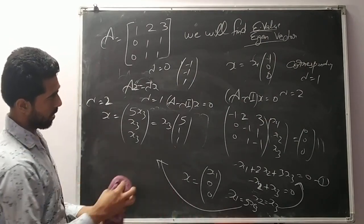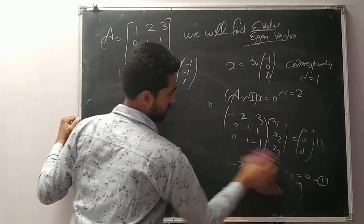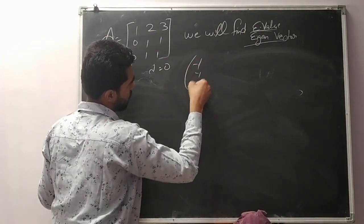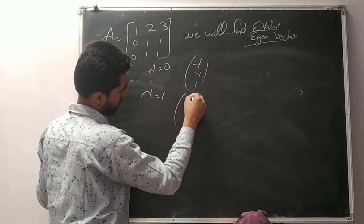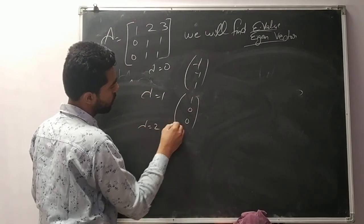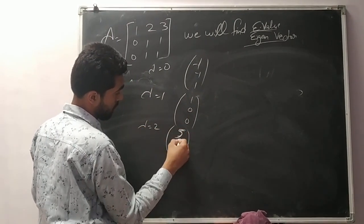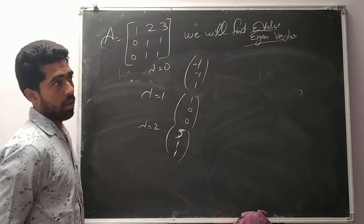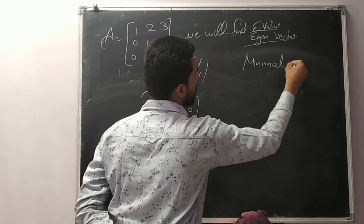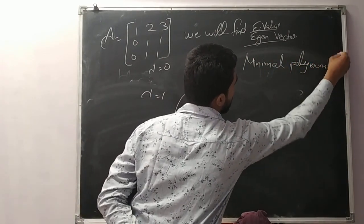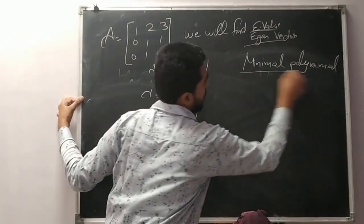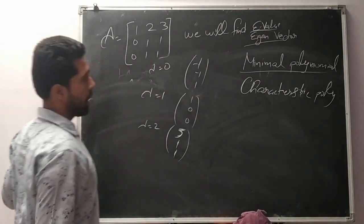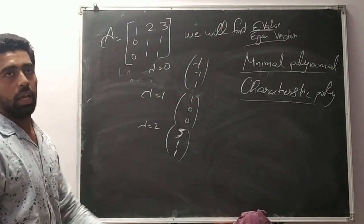So here we find eigenvalue and eigenvector: lambda 0 gives [-1, -1, 1]; lambda 1 gives [1, 0, 0]; lambda 2 gives [5, 1, 1]. Now the next concept is the minimal polynomial. There are two polynomials: minimal polynomial and characteristic polynomial. What is the difference?